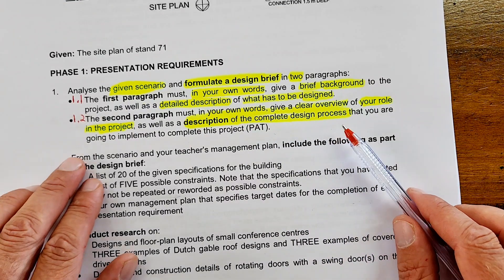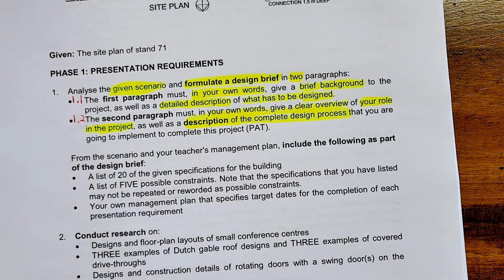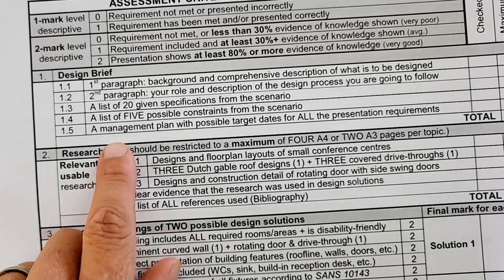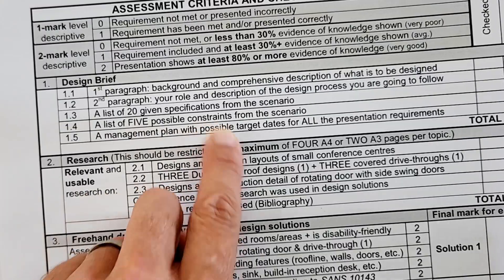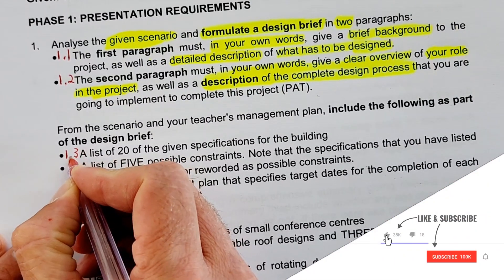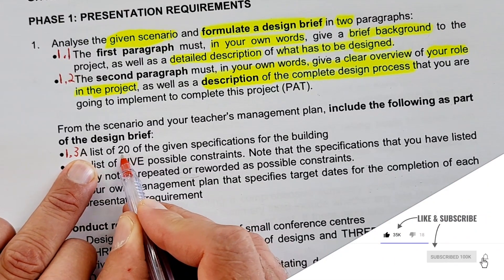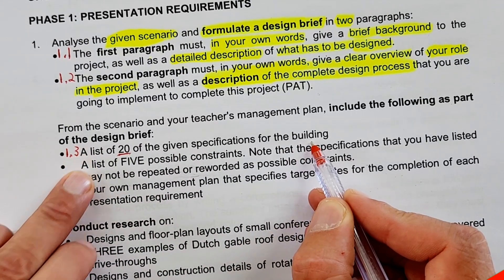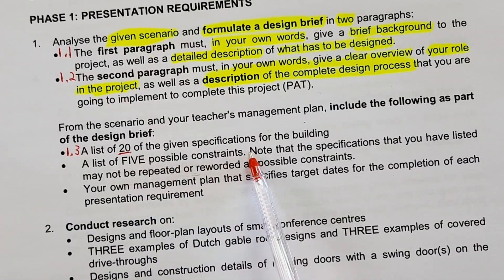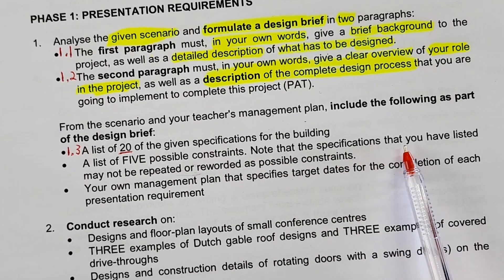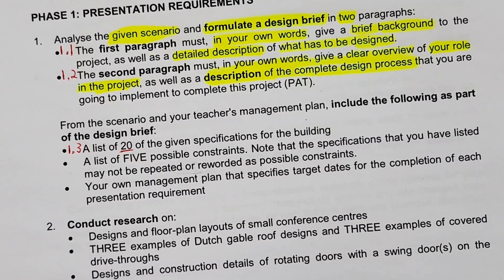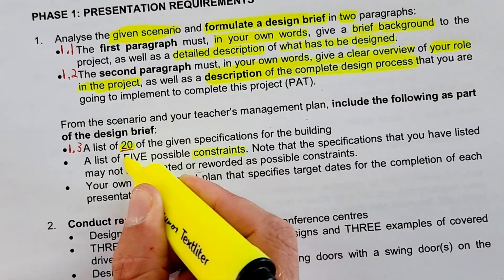The next part is 1.3 on your checklist — a list of at least 20 given specifications for the building, which are all to be found in the scenario document. Then 1.4 is your five possible constraints. Importantly, the specifications you have listed may not be repeated or reworded as possible constraints, so you're going to have to find about 25 items total — 20 specifications plus 5 constraints.